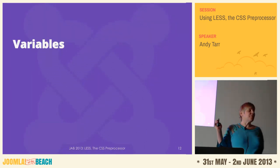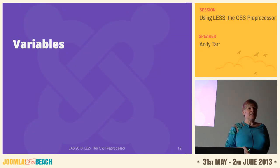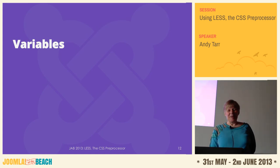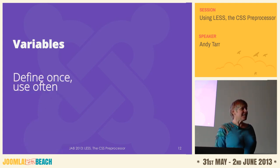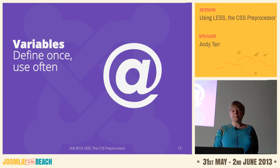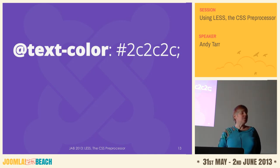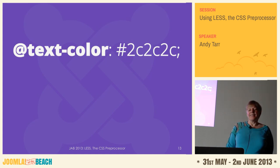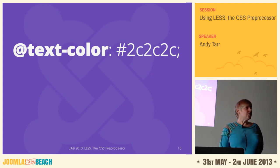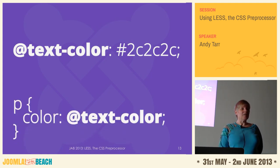So, using LESS - variables. This is one of the most powerful things LESS has. If you're a real programmer, they should be constants, but we won't get too geeky about it. It's a place where you define something once and then you can reuse it all you want. You do it by defining something with the at symbol. So you put something like @text-color: and then put what the color is. Then any place you would normally put that hex code, you can just say @text-color. So your paragraph color is @text-color, your H2 color is @text-color.